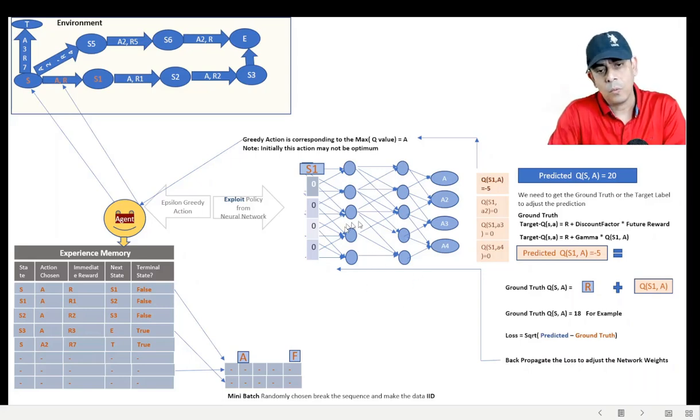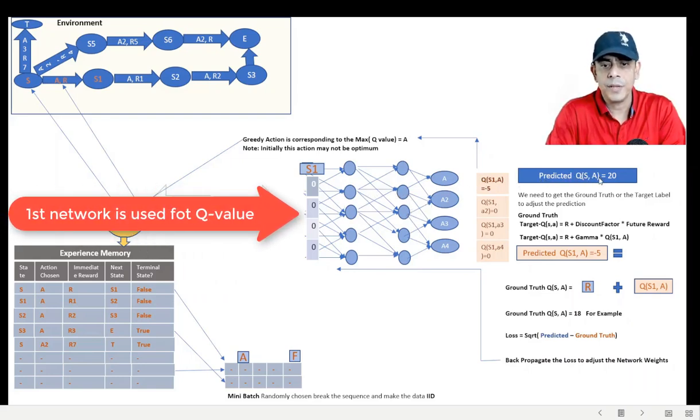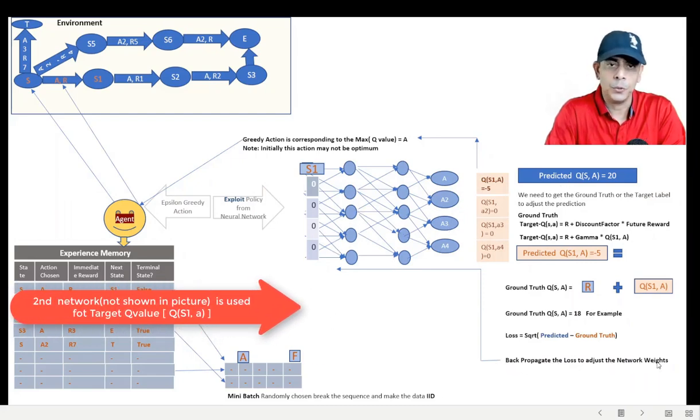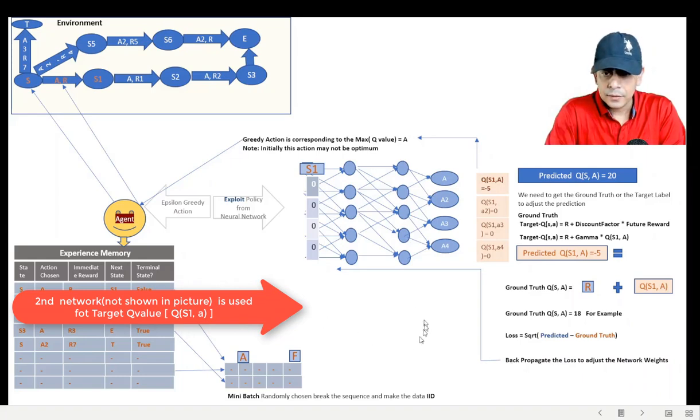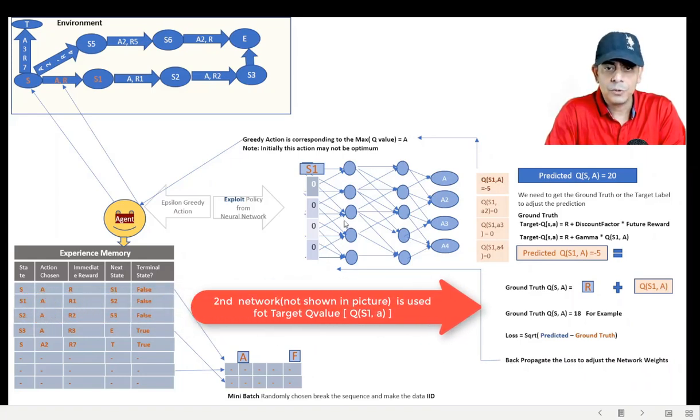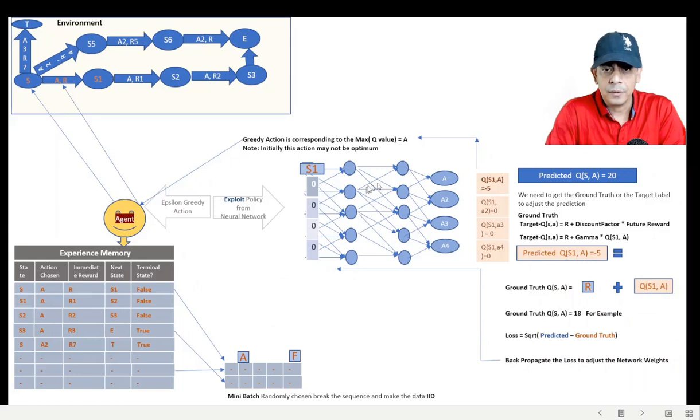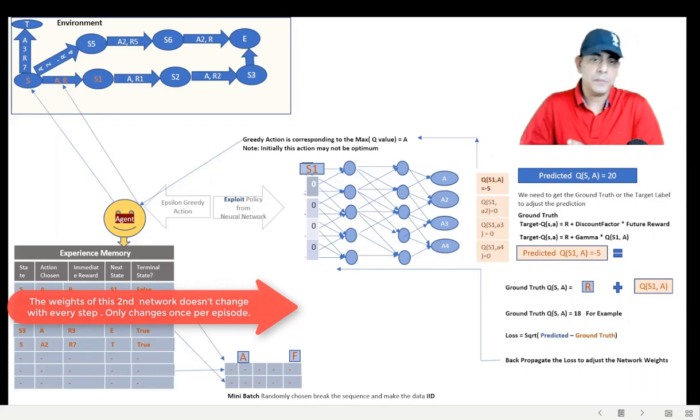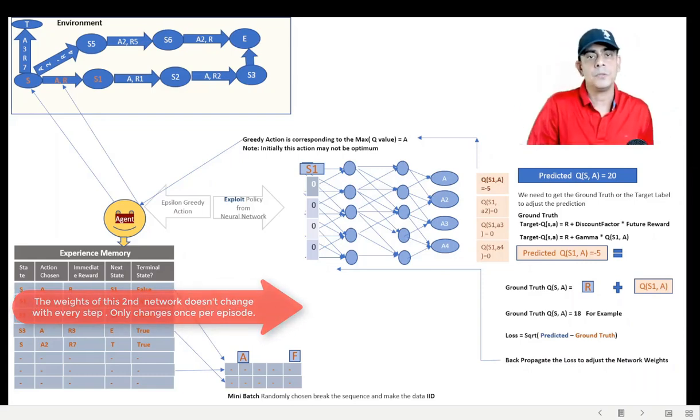So in order to overcome this problem, what we do is we duplicate this network. There would be two networks. One network would be used for predicting Q(S,A), another network would be used for predicting Q(S1,A), which in turn will give you the ground truth. The weights and biases of this network, which would be used for Q(S1,A) prediction, will not be changing as frequently. It will only change at T time steps, typically after each episode.